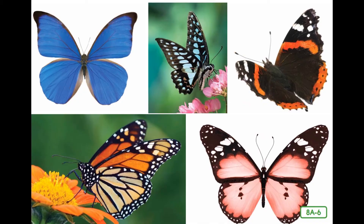Did you know that there are about 25,000 different kinds of butterflies in the world? Butterflies vary in size from about one-eighth of an inch to almost 12 inches. The largest butterfly in the world is the Queen Alexandra Birdwing, with a wingspan of 12 inches wide. It lives in the rainforest of Papua New Guinea.